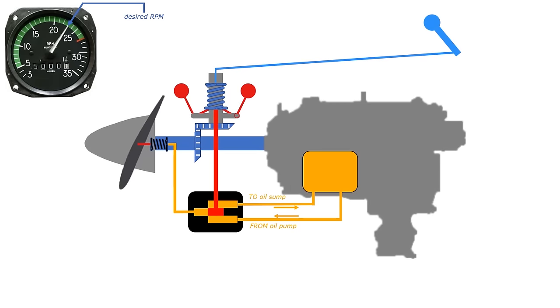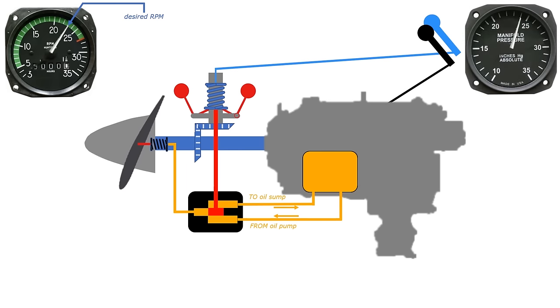So in the constant-speed unit, we have two controls for power and thrust. The blue prop control we talked about, and the throttle handle, typically to the left of the prop control, and usually in black. And so we also have the additional manifold pressure gauge, along with the RPM on the tachometer.